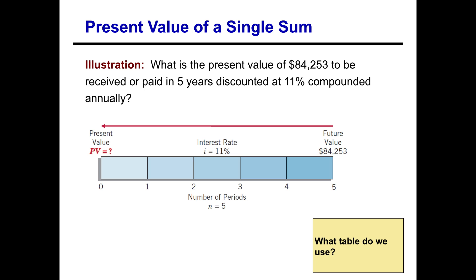Here we have a question that asks: what is the present value of $84,253 to be received or paid in five years, discounted at eleven percent compounded annually? Just like we did with future value questions, we have to ask ourselves: is this a present value or future value question, and is it a lump sum or an annuity question? This question is asking if we want to have $84,253 in the future, what do we need to invest today at eleven percent over five years compounded annually?